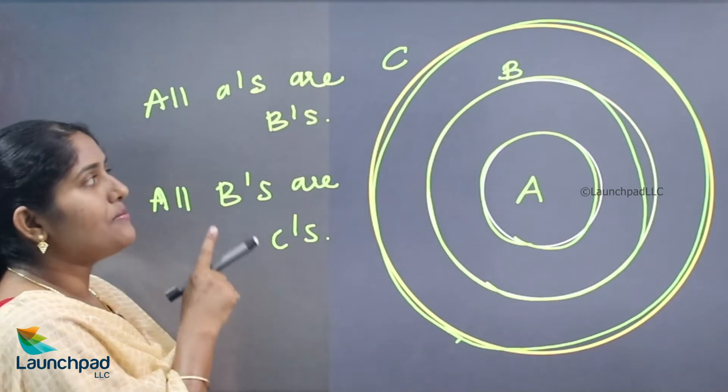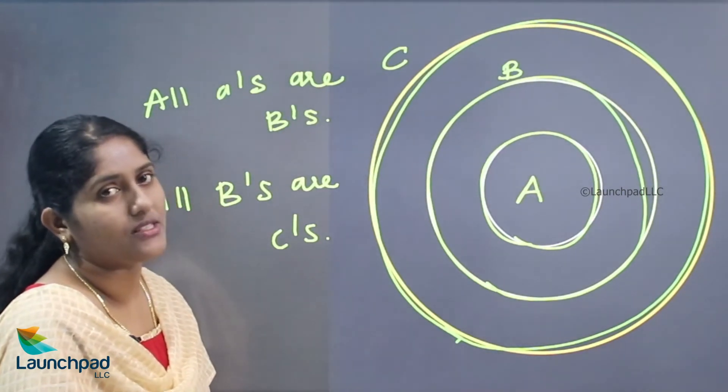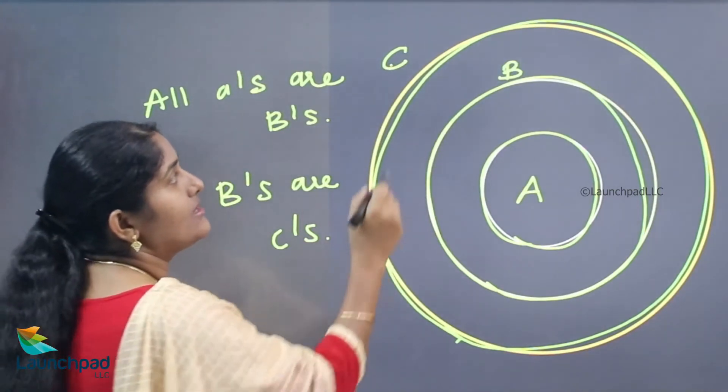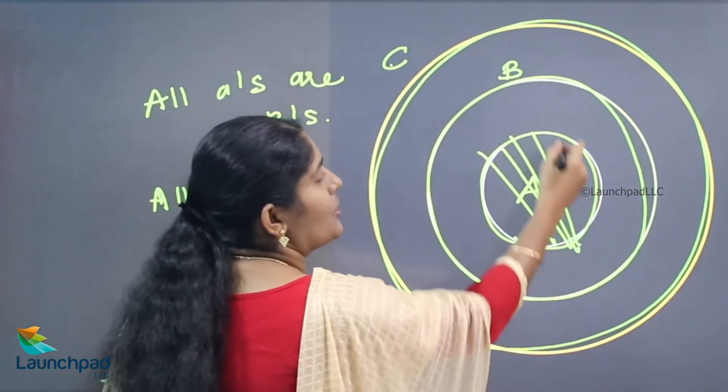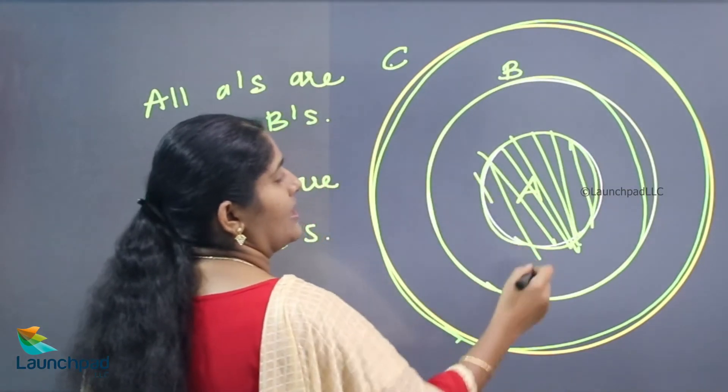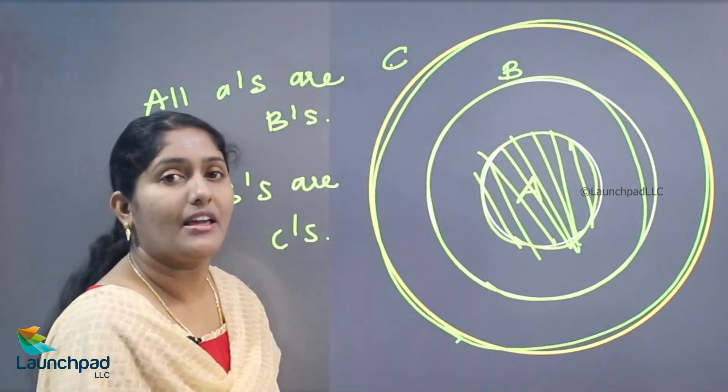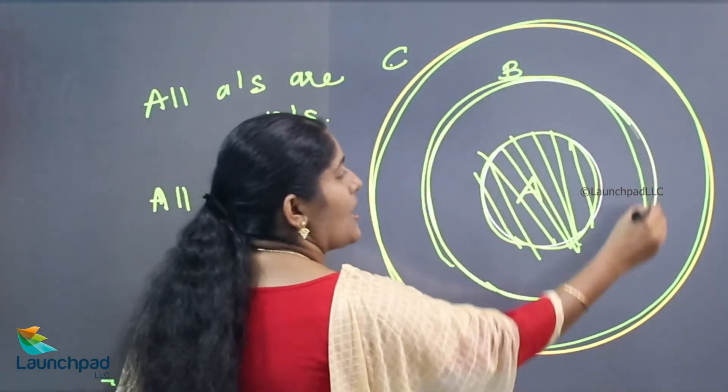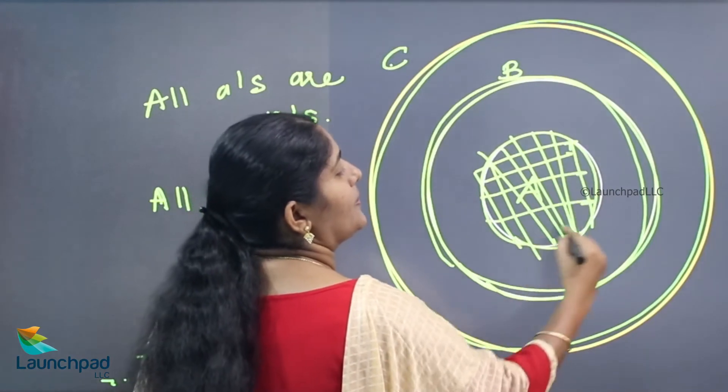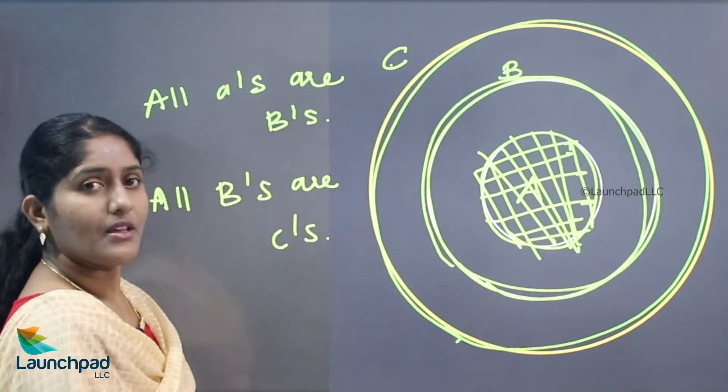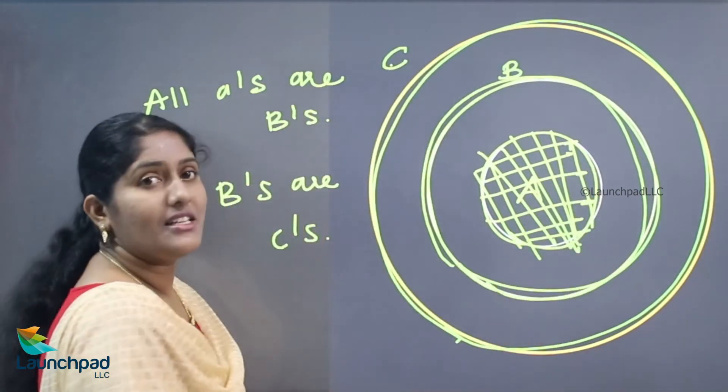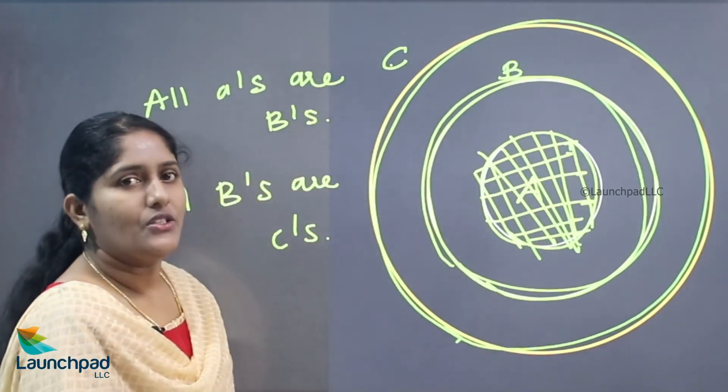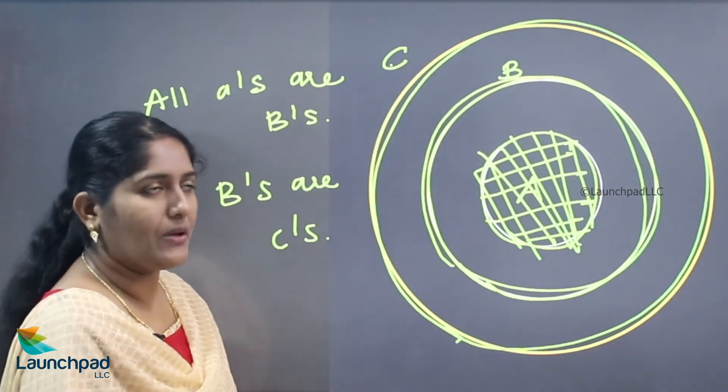Now I am asking one question: some C's are A, whether it is true or false. Some C's are A, obviously it is true. In this C having some part which is occupied by A. This is correct. Some B's are A, yes it is right. In this B's, some portions which is occupied by A.